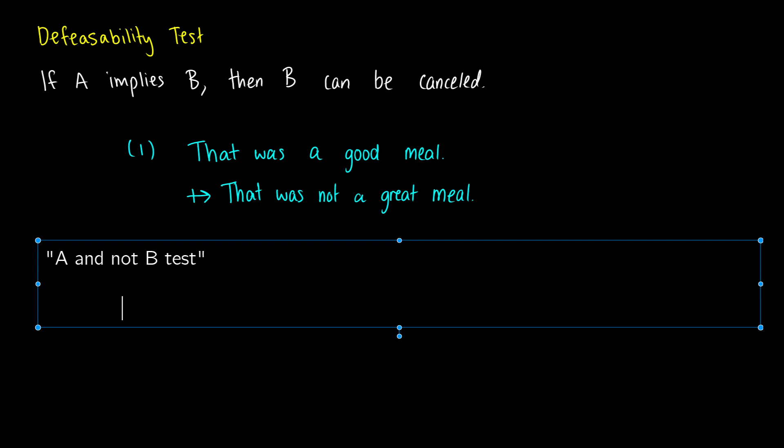So instead, we can say for this one, that was a good meal, and then we can put the words in fact, and now we need to take the negation of B. So that was not a great meal. So the negation of that would be that was a great meal.